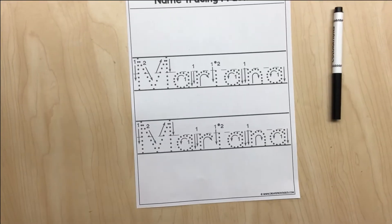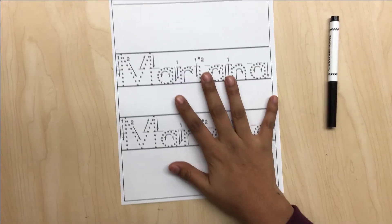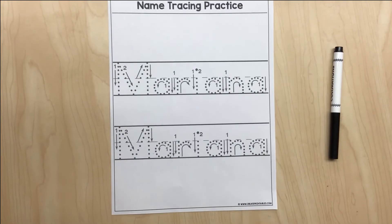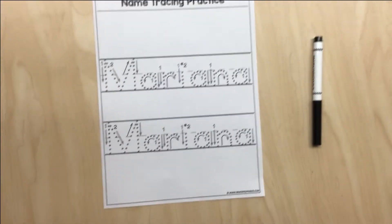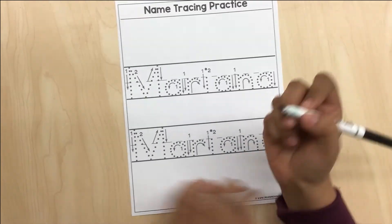Hi, my name is Miss Mariana and today the small group activity is tracing your first name. The materials that we're going to be using today are working with your first name and a marker. First you're going to get your marker.